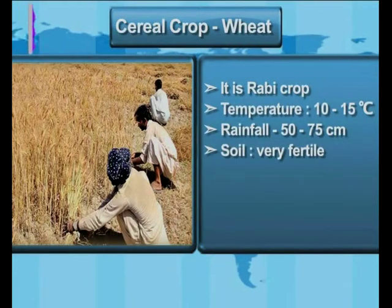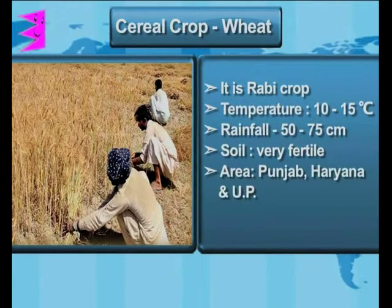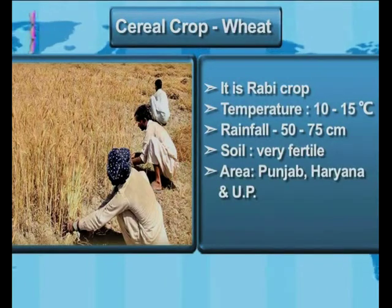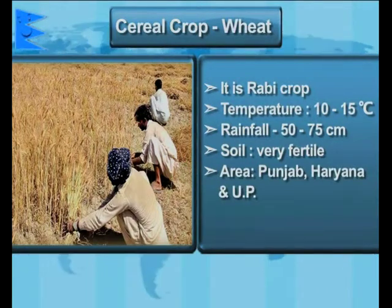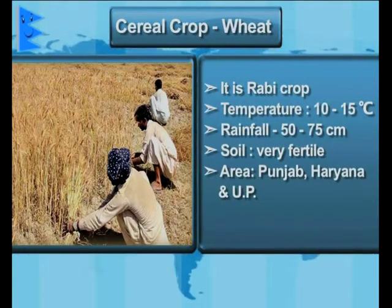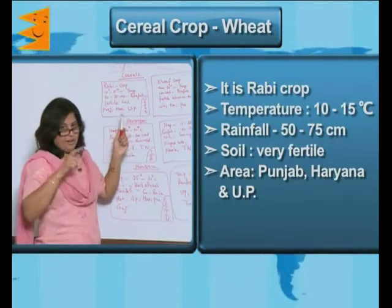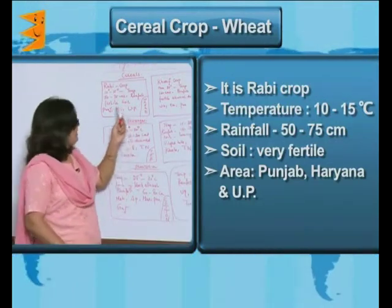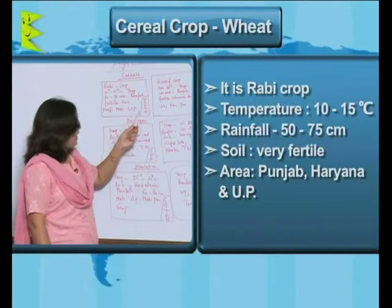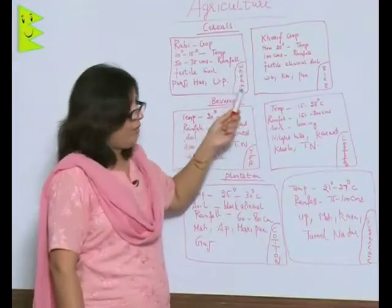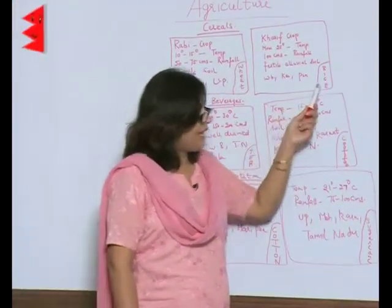You need very fertile soil to grow wheat. The areas where wheat is grown are Punjab, Haryana, and UP. Draw it quickly in your registers — the first table, that is to do with wheat. Now let's move to the second cereal crop.